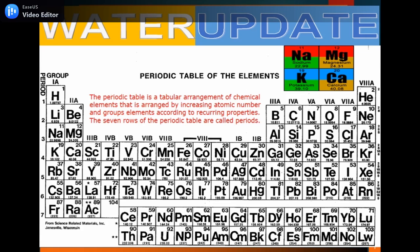Similarly, we can see in the periodic table Group 1A — hydrogen. Hydrogen has an atomic number of 1 and an atomic weight of 1.007937. This is how we read the atomic number in the periodic table.